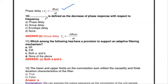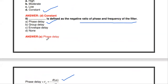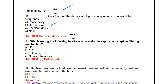Group delay is defined as the decrease of phase response with respect to frequency. Group delay = -dθ(ω)/dω. So: phase delay is the negative ratio of phase and frequency; group delay is the decrease of phase response with respect to frequency.